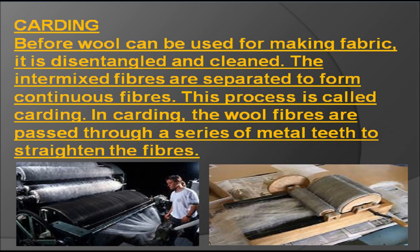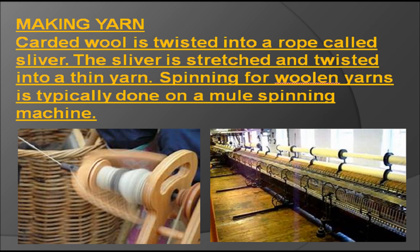Carding: Before wool can be used for making fabric, it is untangled and cleaned. The intermixed fibers are separated to form continuous fibers. This process is called carding. In carding, the wool fibers are passed through a series of metal teeth. The carded wool is then twisted into a rope called a sliver. The sliver is stretched and twisted into a thin yarn. Spinning for woolen yarns is typically done on a mule spinning machine.